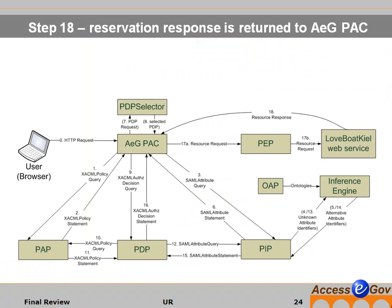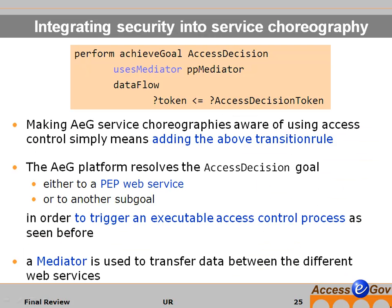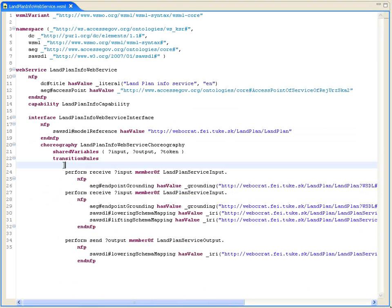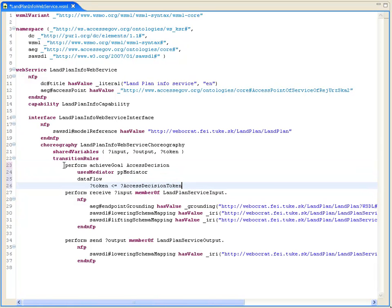After you have seen the data flows of the access control process, I will show you how easy it is to integrate security into existing service choreographies in AccessEGIF. You just need to add the above code snippet in WSML into the choreography files. Then the AccessEGIF platform, which resolves the AccessDecision goal, into a PAP web service or another SOAP goal. Here is WSML's service description of a land-use plan web service as used in Slovakia. Just insert a new transition rule to perform the achieved goal AccessDecision. Additionally, the annotations of related functional services also need to be updated in order to accept the AccessDecision token.